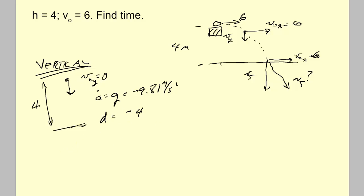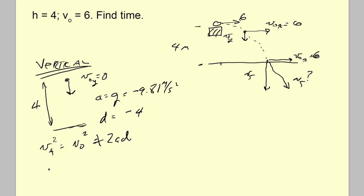We need a formula with initial velocity, acceleration, and displacement — the incredibly handy VF² = V0² + 2AD. What am I trying to figure out? I thought I was trying to figure out time — well, let's do that in a second.